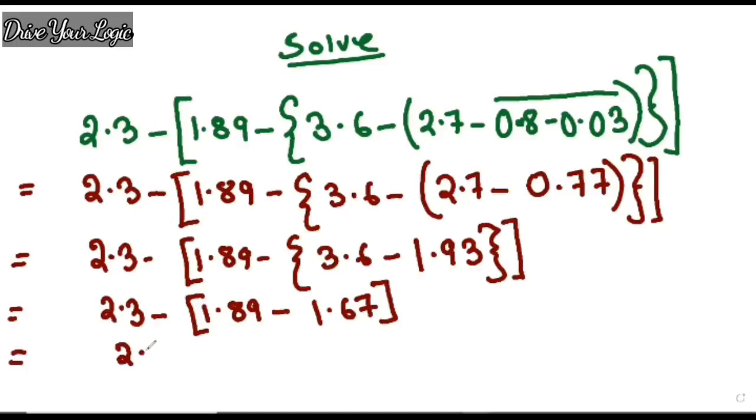And then the last line: 2.3 minus what subtraction you will do, 1.89 minus 1.67, and your answer is 0.22. And your final answer will be 2.08. So that's it, very easy process. This type of sum is very easy to do.